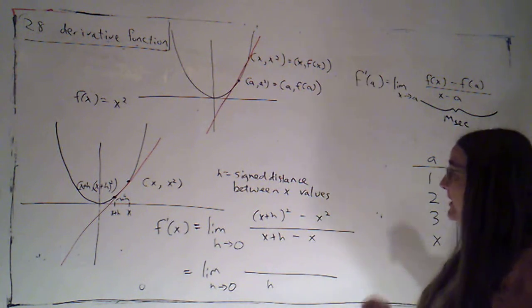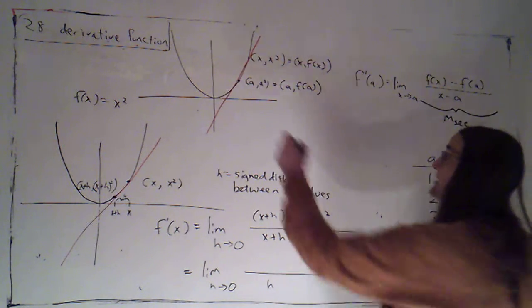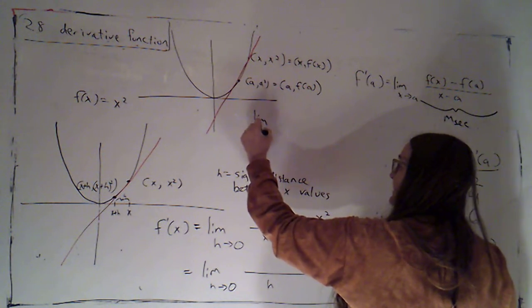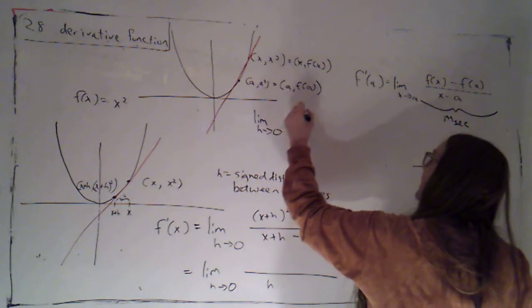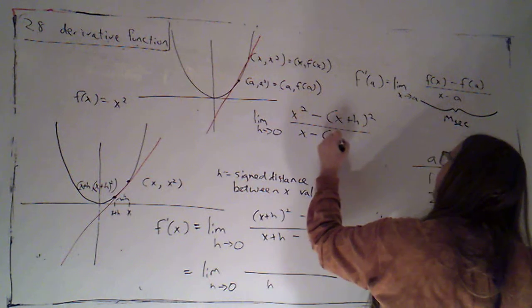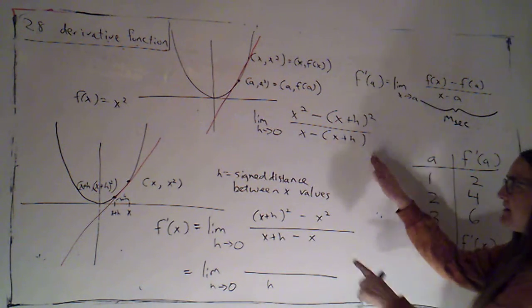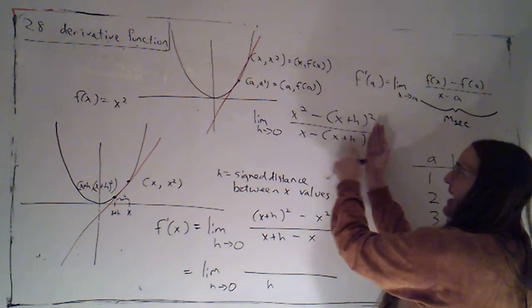But notice, while it would be okay to set this up so that I was subtracting in the other order, so that it's the limit as h goes to zero of x squared minus x plus h squared over x minus x plus h. If I did this, I've got to make sure that I'm subtracting that whole thing. I would have to distribute that negative.